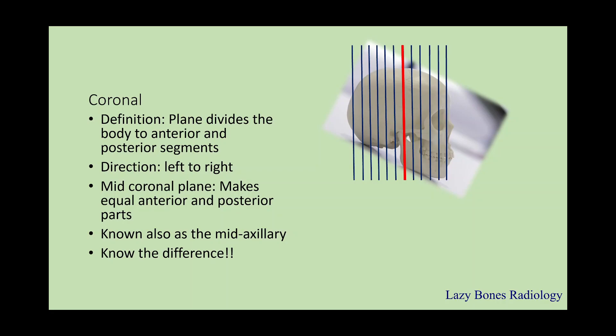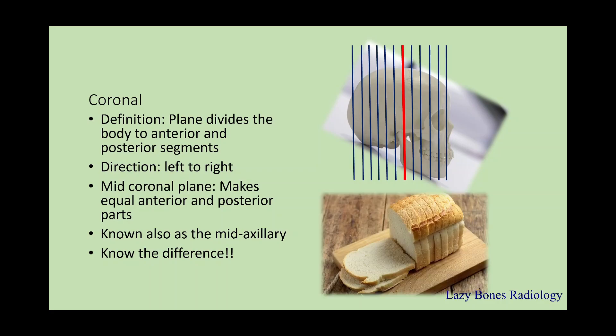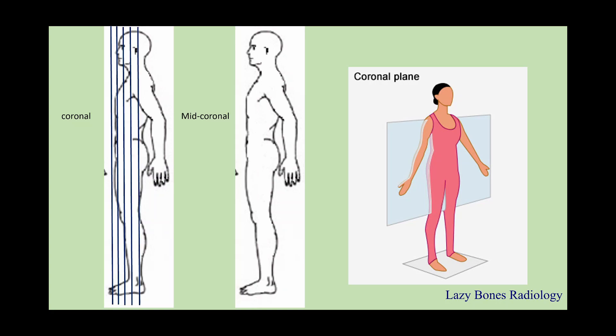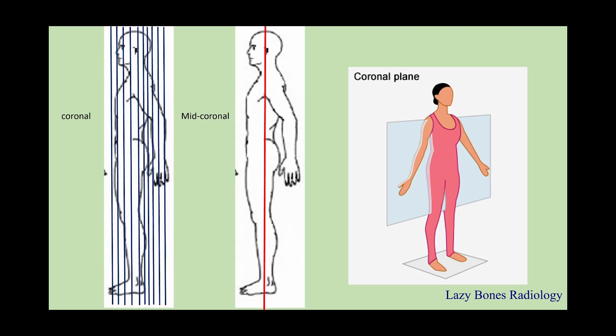Know the difference between a coronal and a mid-coronal plane, also known as the mid-axillary plane. One way I'm able to identify coronal planes: if you look at a loaf of bread, all the little slices make a coronal plane. Just know that the one right in the middle is the mid-coronal plane. So multiple coronal planes, only one mid-coronal plane. Very important that you write this down and do not get them confused.